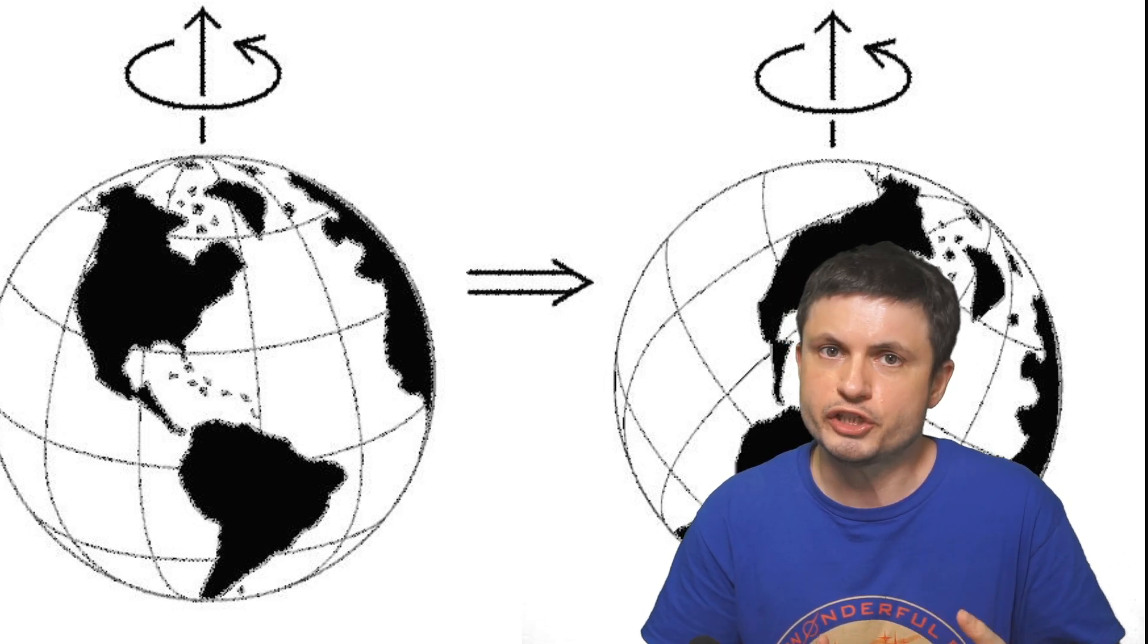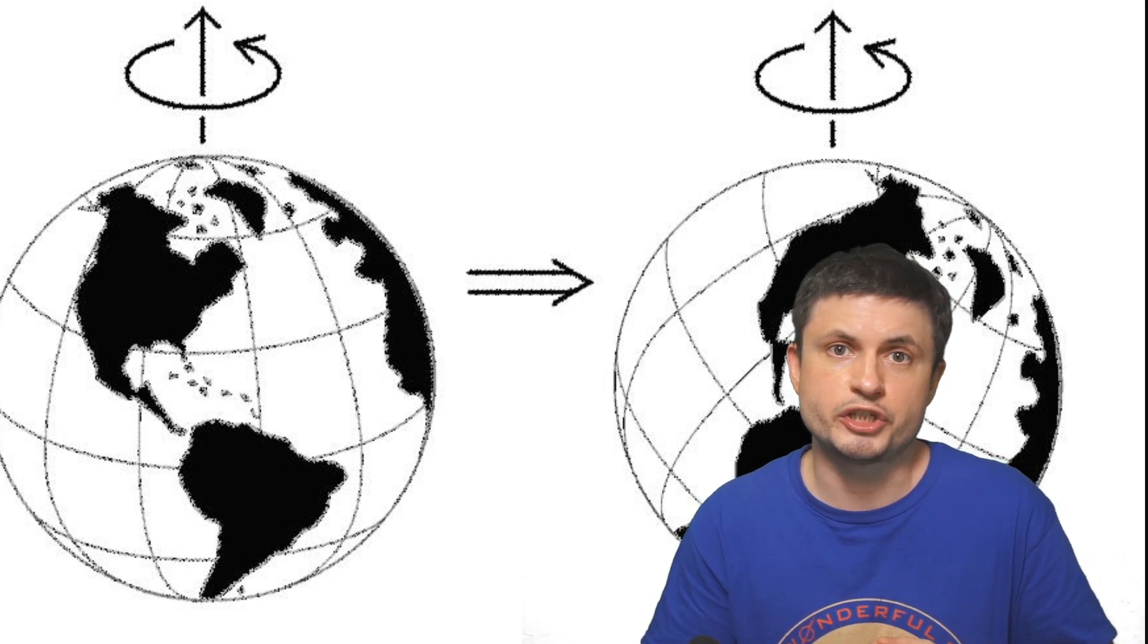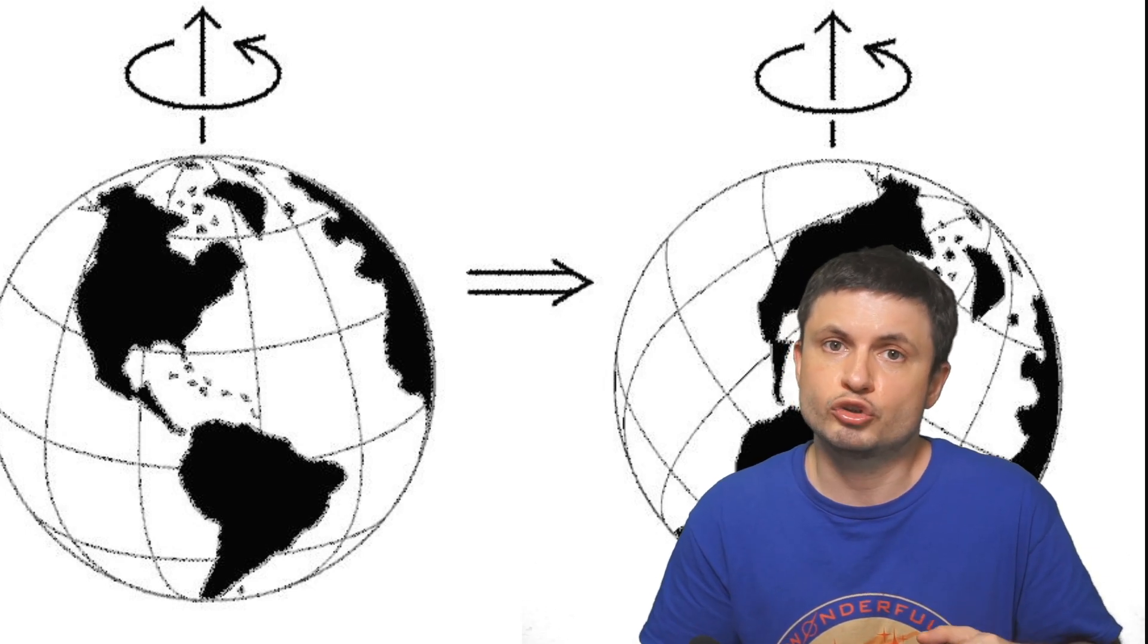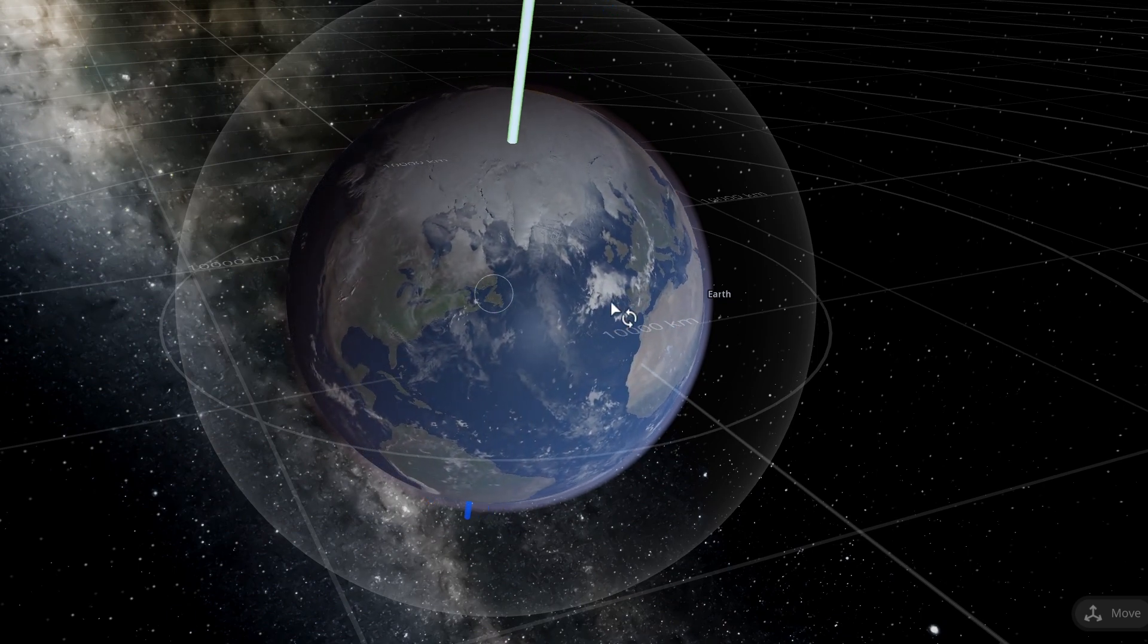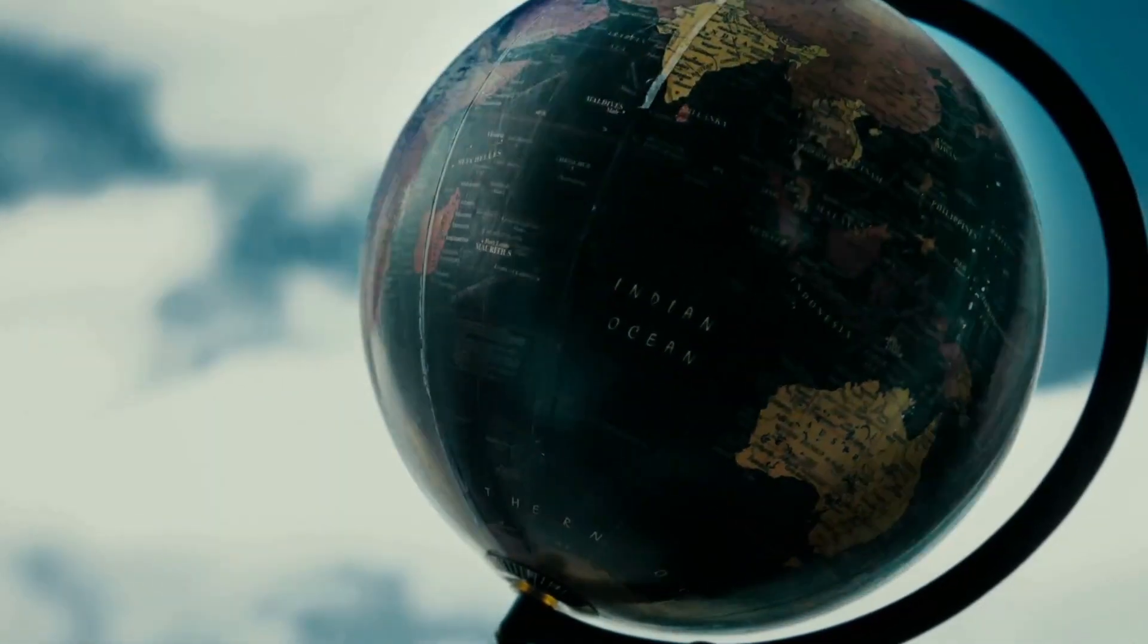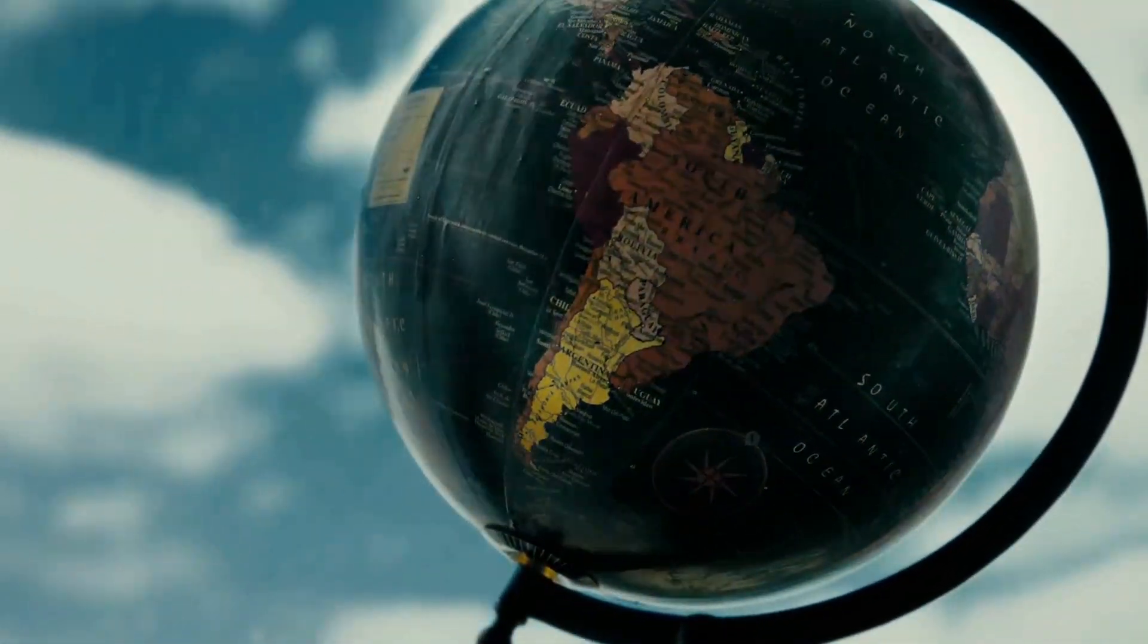With the main difference being that in true polar wander it's the actual axis that changes on the surface of the planet. Whereas with the precession and with the nutation, the location of the axis does not change on the surface of the planet, but the actual planet's rotation and the actual planet's spin starts to move around and starts to affect the planet that way. And even though in precession, for example, the effects are coming from objects outside of planet earth, for true polar wander, the actual effects are coming from within the planet, or at least from the surface.